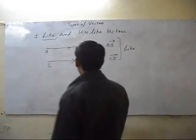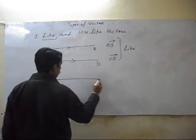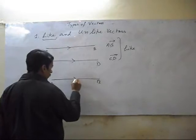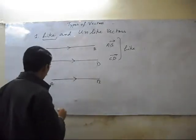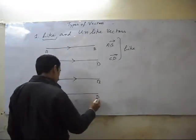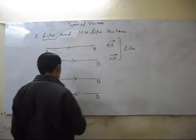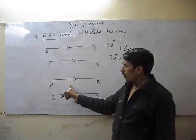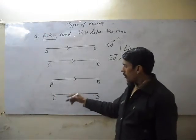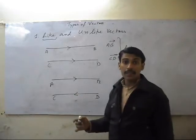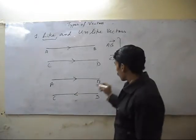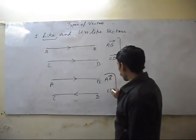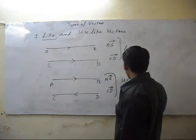Second, unlike vectors. If the direction of the first vector is just opposite to the direction of the second vector, then these vectors — AB vector and CD vector — will be unlike vectors.